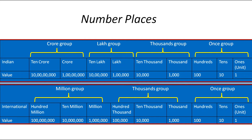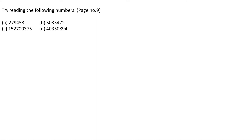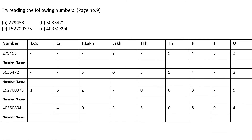Now let's move to the question on page number 9. The question is: try reading the following numbers. To make it easier to read, I will put these numbers in a place value chart. Now it is easier to read. In the first example, two falls in the place of Lakh, and seven and nine are in the Thousands group, then four, five, three in the Hundreds, Tens, and Ones.